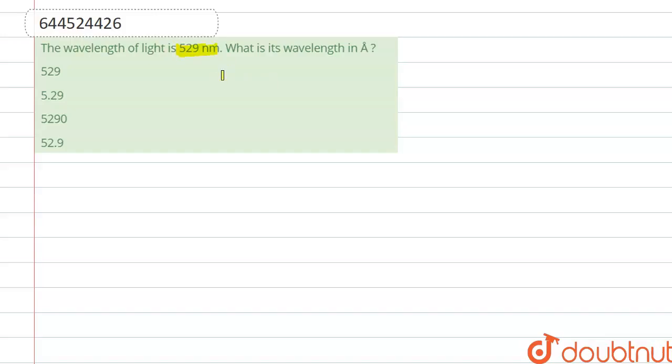The wavelength of light is 529 nanometer. What is its wavelength in angstrom?